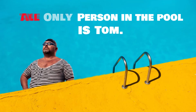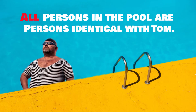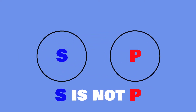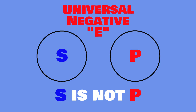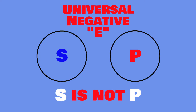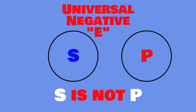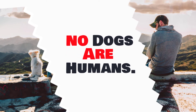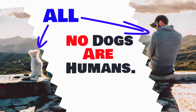What we want instead is: 'All persons in the pool are persons identical with Tom.' For negative propositions asserting a denial of an entire class, we have a universal negative E-type. Although the negative quality comes from the copula 'is not,' we can separate the negation and place it in the quantifier position. So 'dogs are not humans' becomes 'No dogs are humans.' The actual quantifier is all — we're talking about all dogs not being something — but universal negatives are never written as 'all are not.'